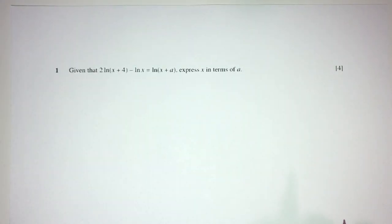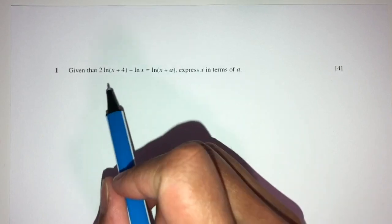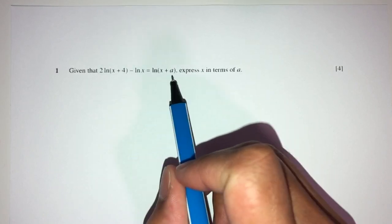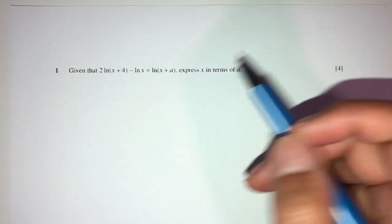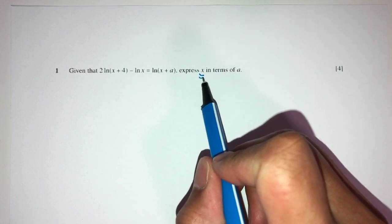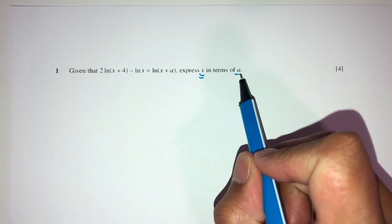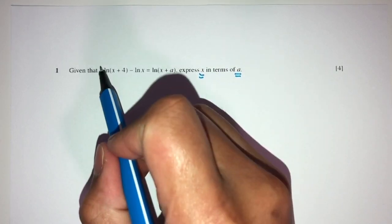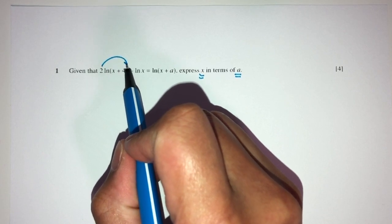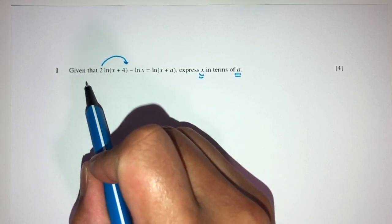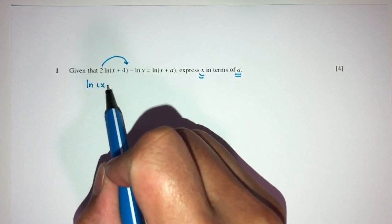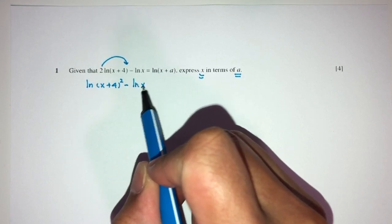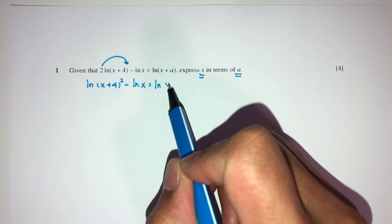Let's move on to question number one. Here we have given that 2 ln of x plus 4 minus ln of x equals this thing. We have to make x become the subject of the formula in terms of A. So one by one, let's proceed. Here we can send the power on top by the laws of logarithms. You have ln of x plus 4 squared minus ln of x equals ln of x plus A.